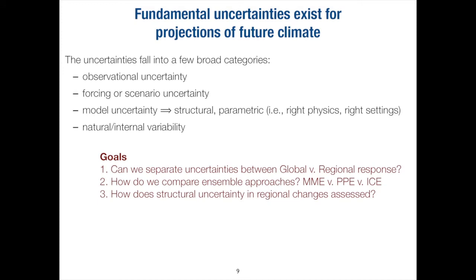Fundamentally, uncertainties exist for projections of future climate. We have observational uncertainty, forcing or scenario uncertainty, modeling uncertainty — which can be both structural or parametric — and natural internal variability. With the rest of the talk, I've put it into three different goals: can we separate uncertainties between global and regional response? How do we compare ensemble approaches — the multi-model ensemble, perturbed parameter ensemble, or initial condition ensemble? And how does structural uncertainty in regional climate changes get assessed?